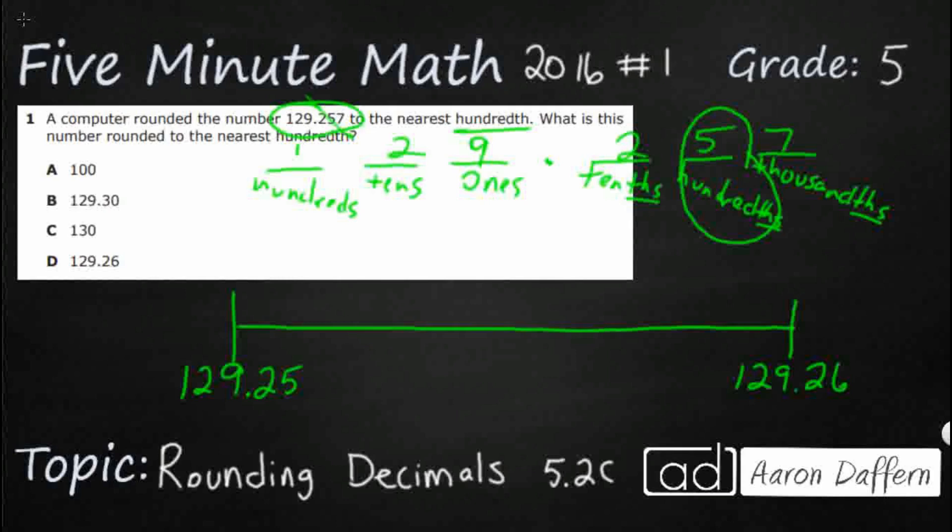So we need a midpoint here, and it's kind of hard to see a midpoint between 25 and 26. So what we could do is we can go ahead and just add an extra zero to make it look like 250 and 260.